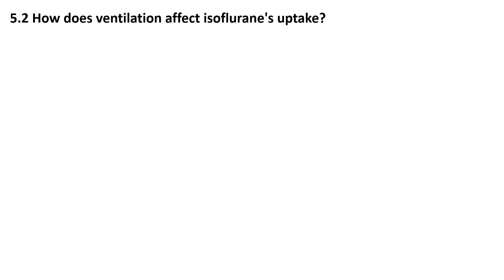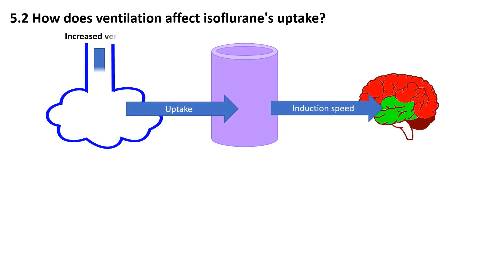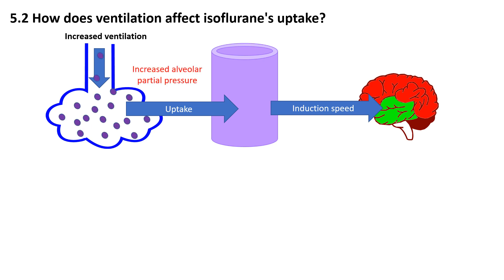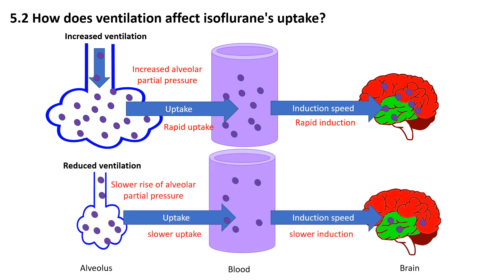How does ventilation affect isoflurane's uptake? When minute ventilation increases, a greater volume of anesthetic gas reaches the alveoli each minute, rapidly elevating the alveolar partial pressure of isoflurane. This creates a steeper diffusion gradient across the respiratory membrane, allowing faster transfer of anesthetic molecules into pulmonary capillary blood and subsequently arterial blood. As the arterial partial pressure rises more quickly, the anesthetic reaches effective concentrations in the central nervous system sooner, significantly accelerating the induction process. With hypoventilation, we would see the opposite effect.